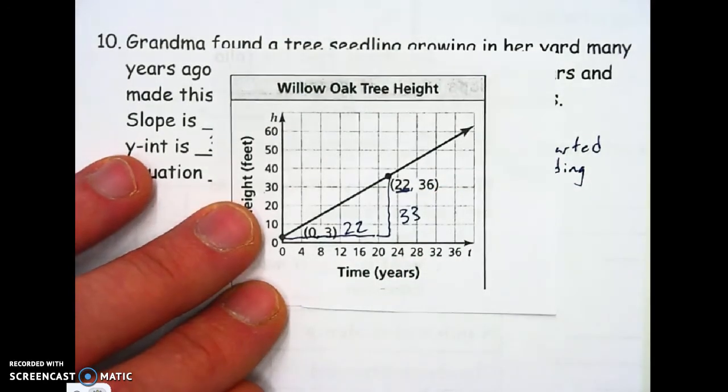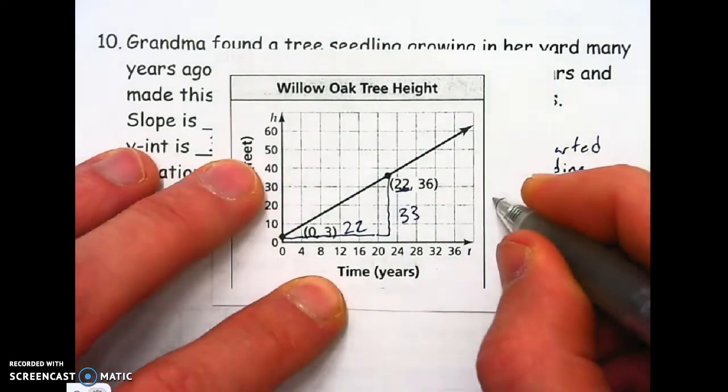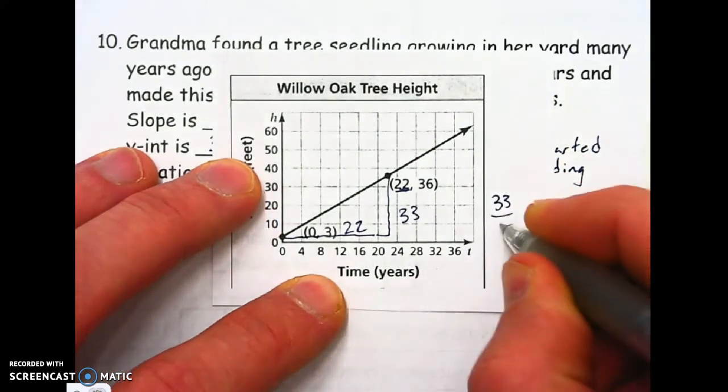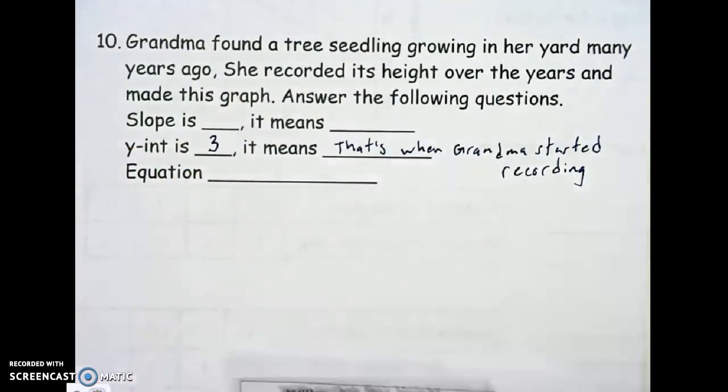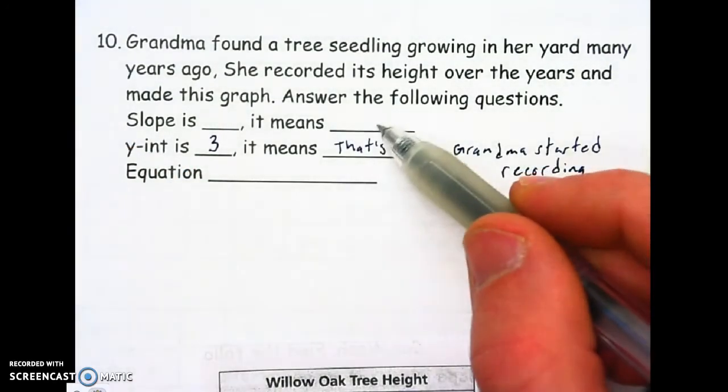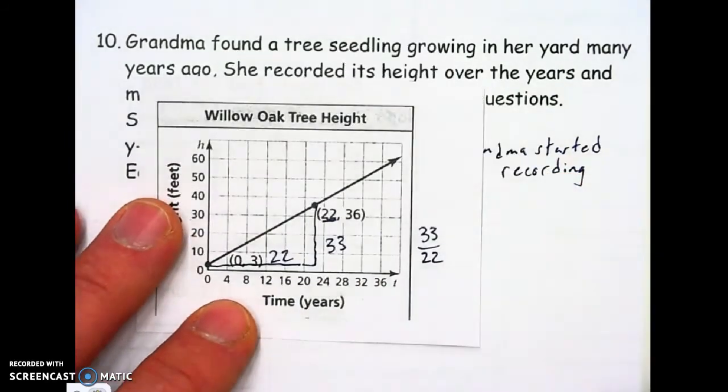So now we're going to write in our slope there. It's going to be rise over run. Somebody divide that for me. I'm going to come back to that. And we're going to write in what that would mean. That's how many feet it grows per year.